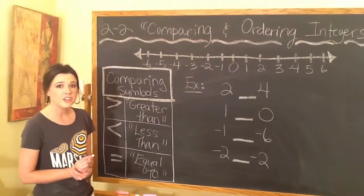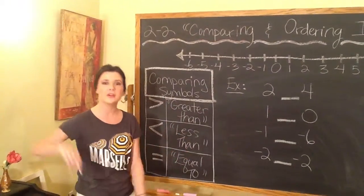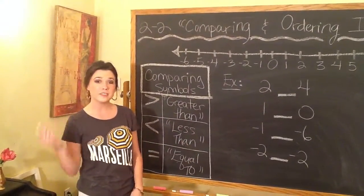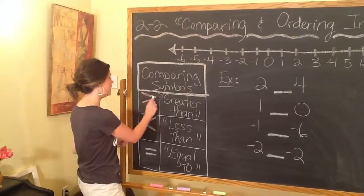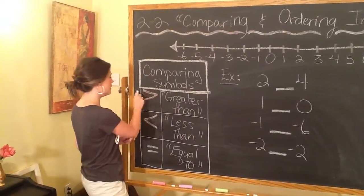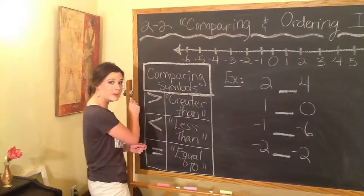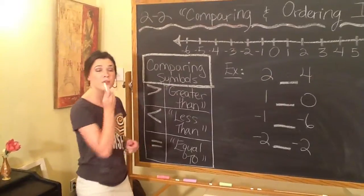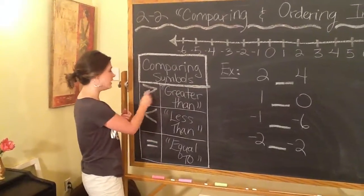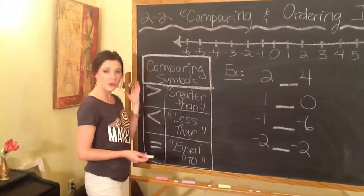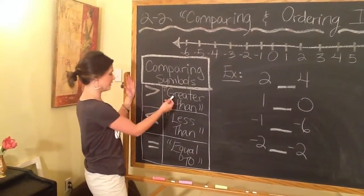The first thing I want us to talk about are the comparing symbols. If I'm saying that this number is greater than, less than, or equal to another number, what symbols am I using? When the sign is opened to the left, this is the greater than symbol, because it says this number is bigger than that number. You can think of it as a mouth that is open and wants to eat the bigger number — so this number is greater than this number.